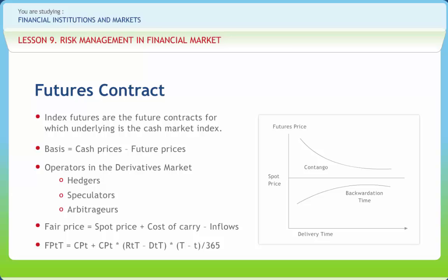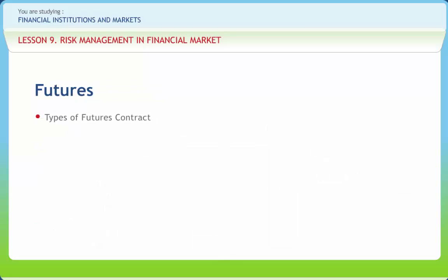The situation where the price of a commodity for future delivery is higher than the spot price, or where a far future delivery price is higher than a nearer future delivery, is known as contango. The reverse, where the price for future delivery is lower than the spot price or a far future delivery price is lower than a nearer future delivery, is known as backwardation.